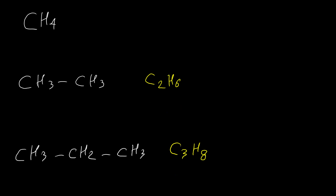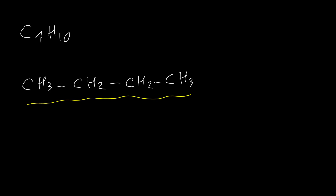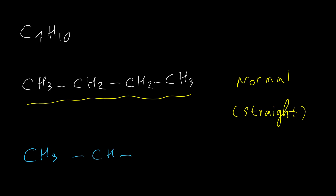Let's see how many different structures are possible for butane. For butane, C4H10, there are two possible structures. The first is the straight chain, where all carbons form one chain — this is called a normal alkane. The second is a branched alkane: three carbons as a chain and one CH3 group as a branch. The name for the first structure is butane and the second is isobutane.